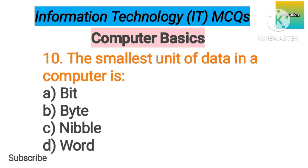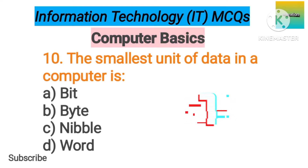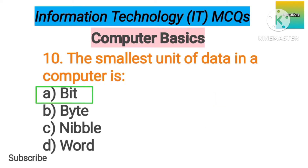Number 10. The smallest unit of data in a computer is option A: Bit. B: Byte. C: Nibble. D: Word. The correct answer is option A, Bit.